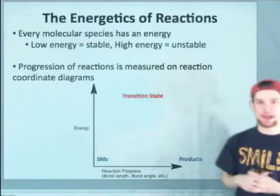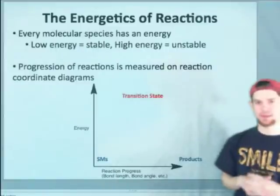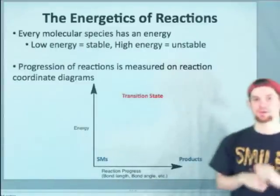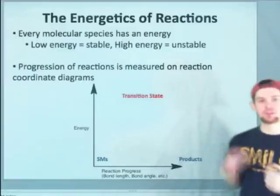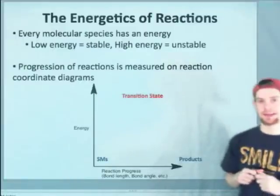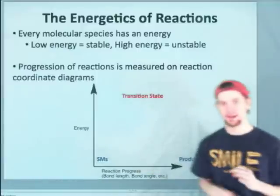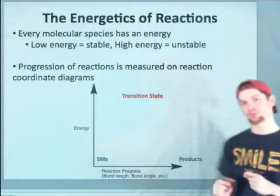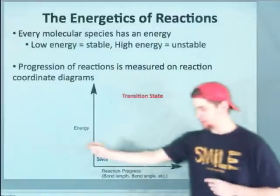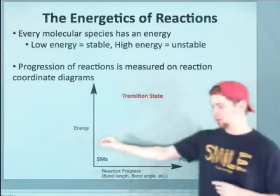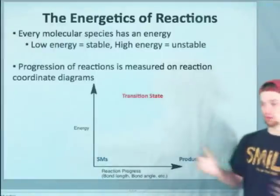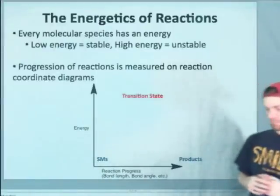On the x-axis, what we have represented here is the progress of the reaction. This is kind of an abstract variable. It can be a bond length in one of the reactants, a bond angle in one of the reactants, or products. It's just something to measure the progress of the reaction. So the question we're answering is what's the relationship between the progress of the reaction and energy, the total energy of the system.